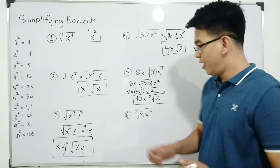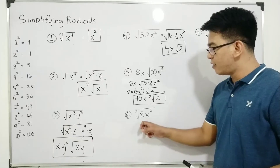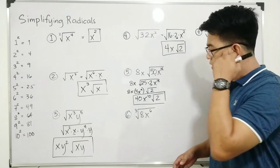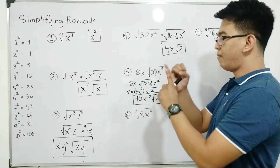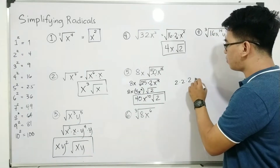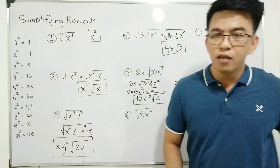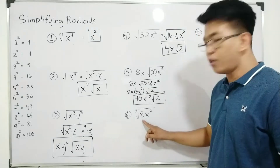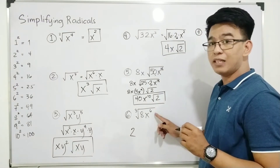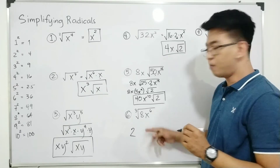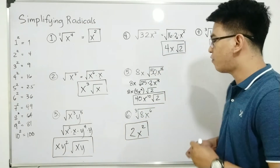For number six, this is a cube root: the cube root of 8x raised to the 6th power. The number 8 is a perfect cube because 2 times 2 times 2 equals 8, so the cube root of 8 is 2. As for x to the 6th, since 6 is divisible by 3, x to the 6th is also a perfect cube. The answer is simply 2x squared.